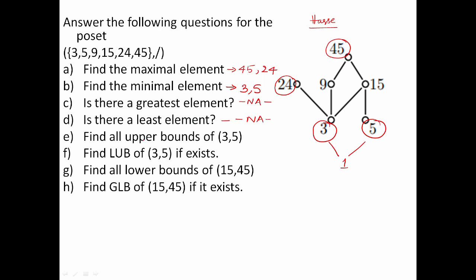Find all upper bounds of 3 and 5. So upper bounds - we have the elements 15 and 45. Now 15 and 45: we can reach the key in which we can reach all the elements. So obviously 15 is okay. That is why the key is 3 and 5. So lower bounds and upper bounds are 3.